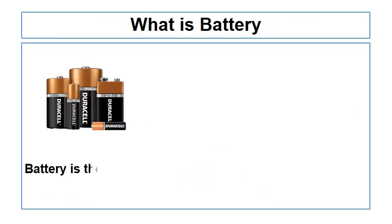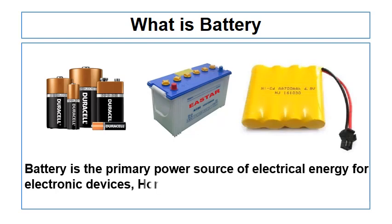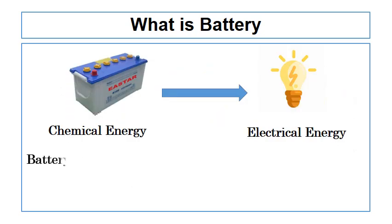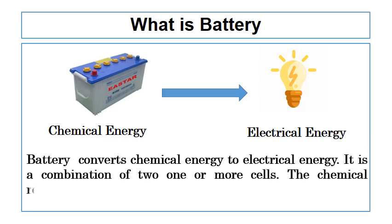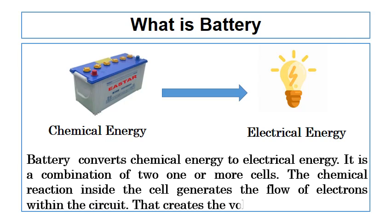A battery is a primary source of electrical energy for electronic devices, home appliances, industrial equipment and many more. Battery converts chemical energy to electrical energy. A battery is a combination of two or more cells. The chemical reaction inside the cell generates the flow of electrons within the circuit that generates the voltage.